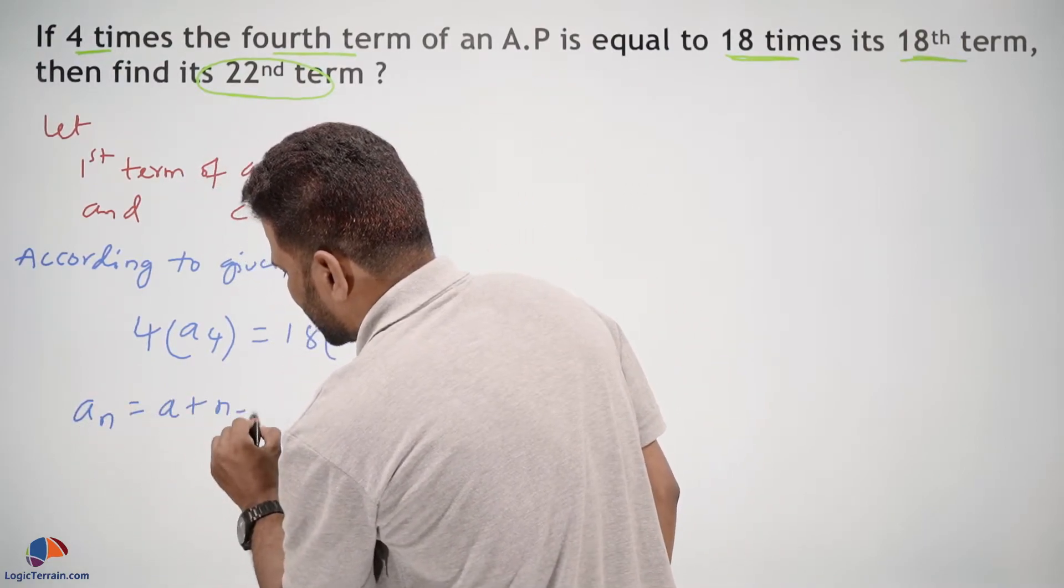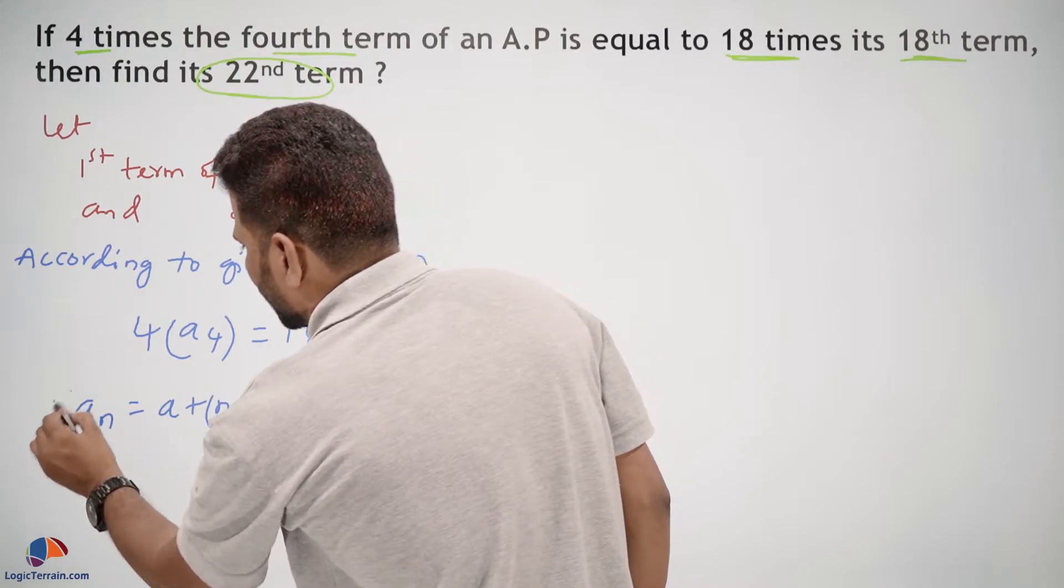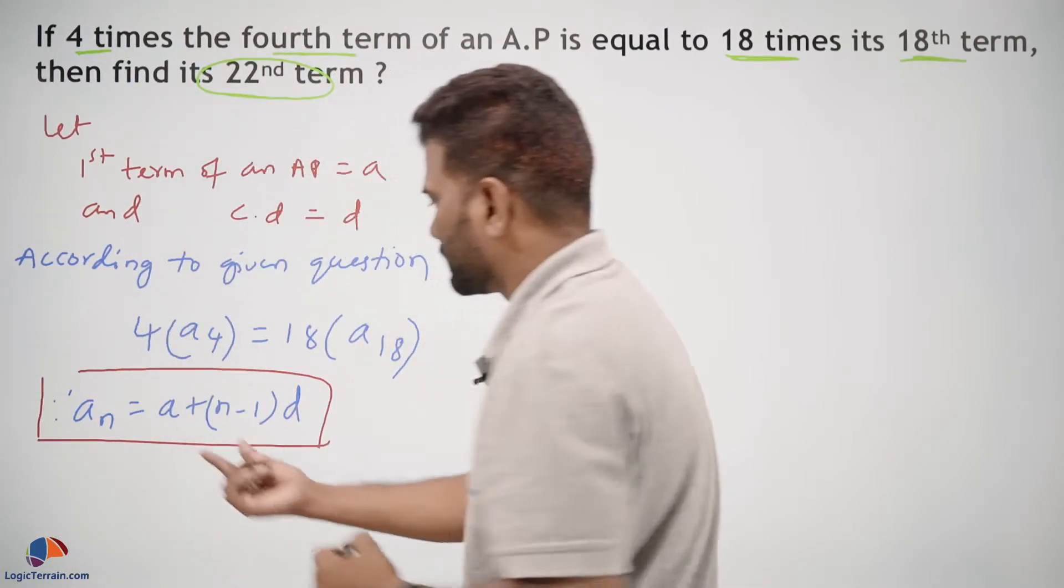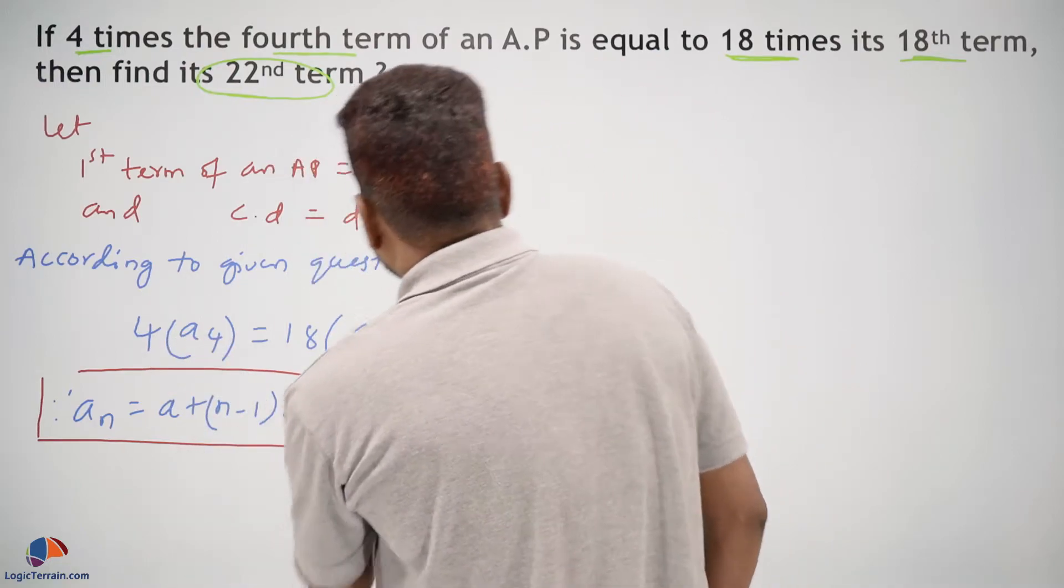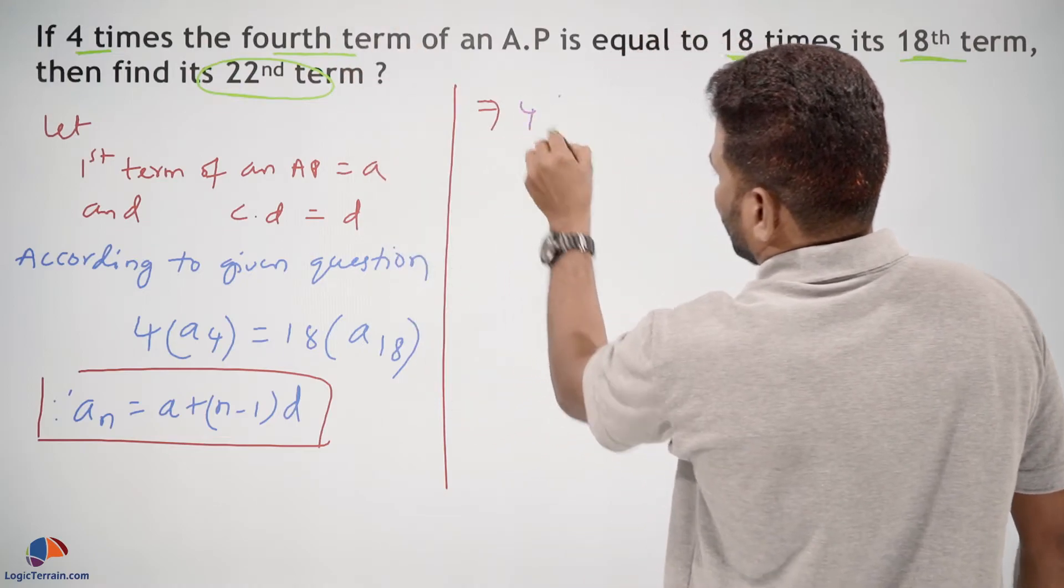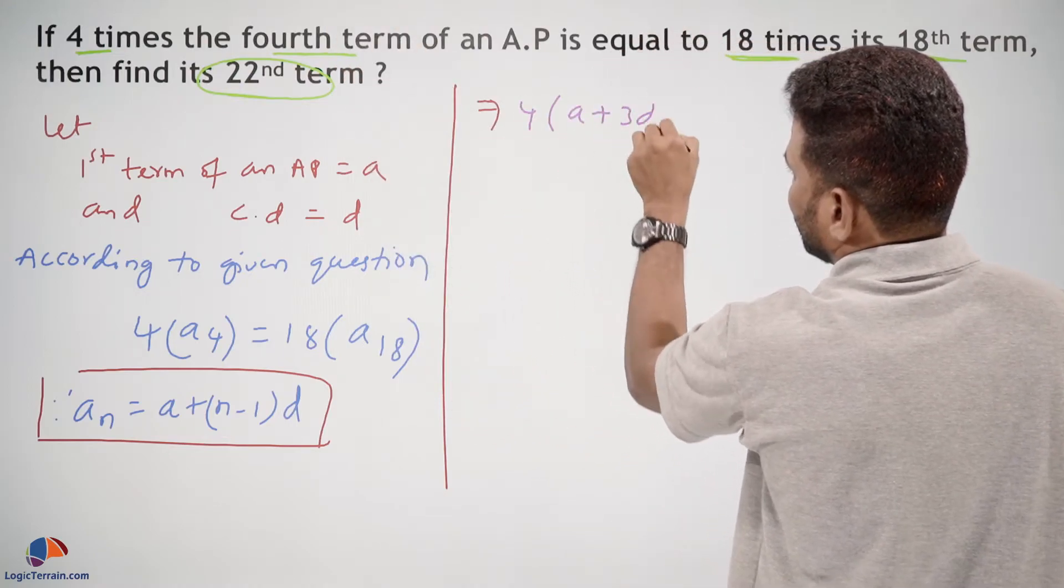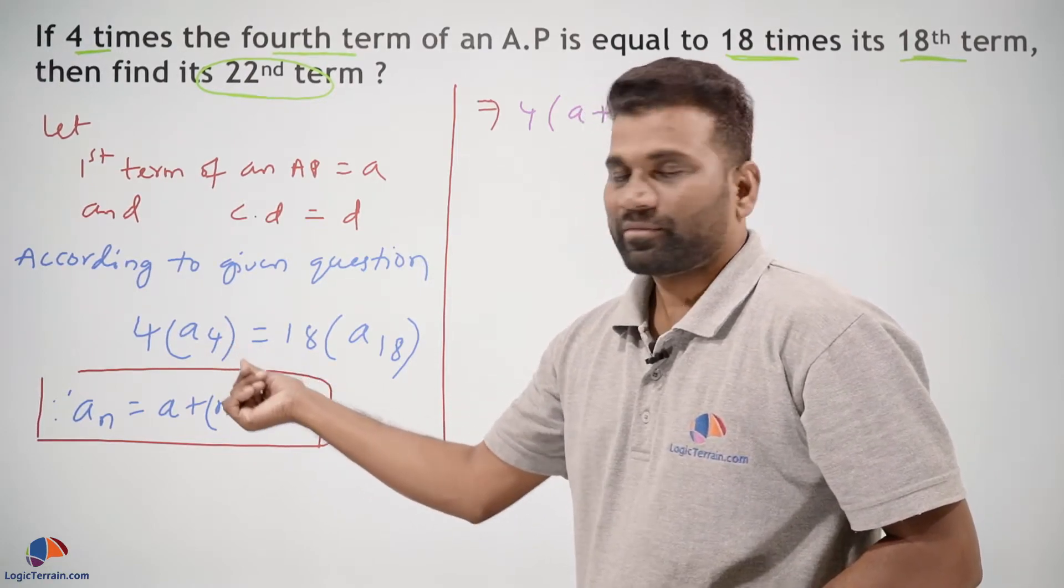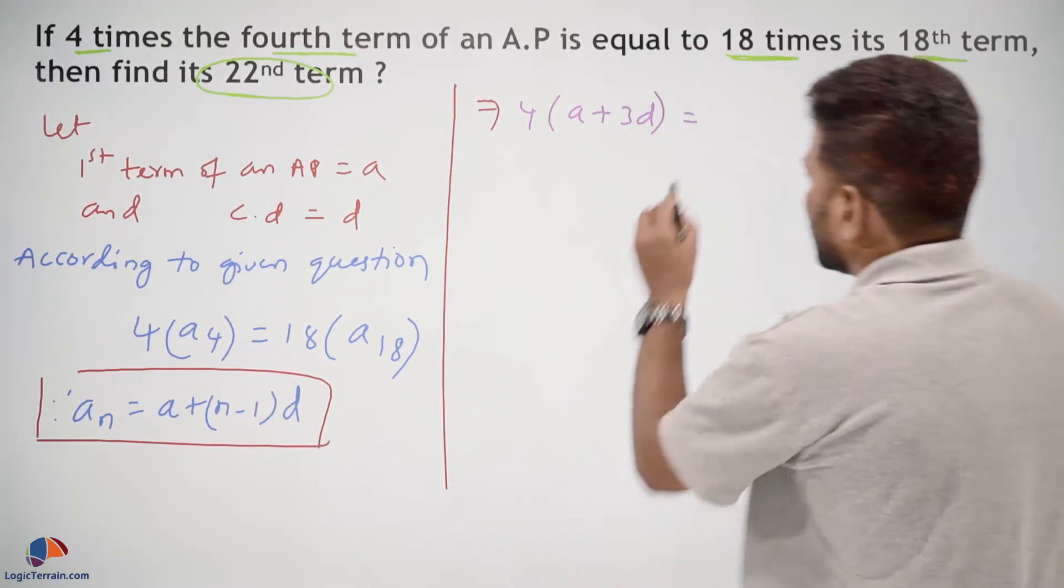By using this formula, 4 times the 4th term equals 4 into (A plus 3D). Here n is 4, N minus 1 is 3, so 4 minus 1 is 3. This equals